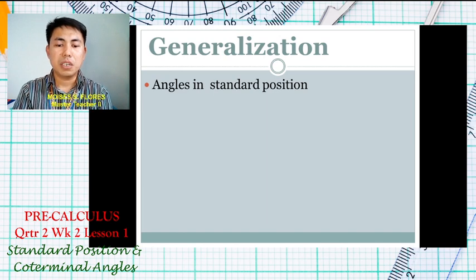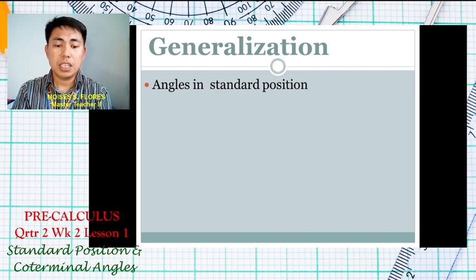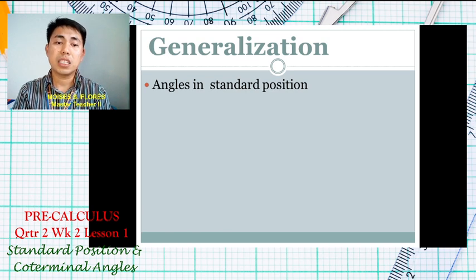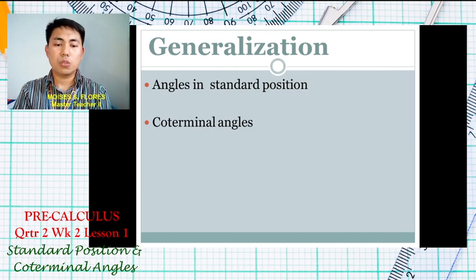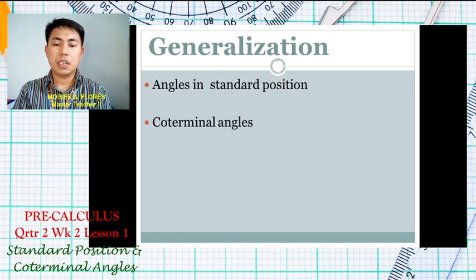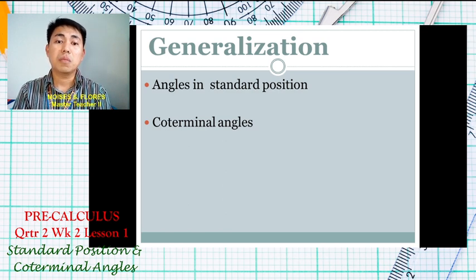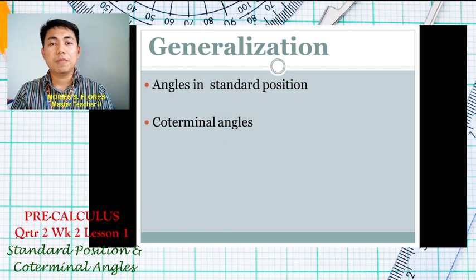To summarize: angles in standard position have the vertex at the origin, the initial side on the positive x-axis, and two directions — counterclockwise (positive) or clockwise (negative). Coterminal angles are two angles in standard position whose terminal sides coincide, meaning they share the same terminal side.